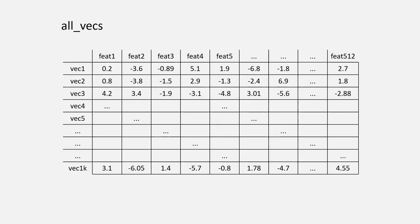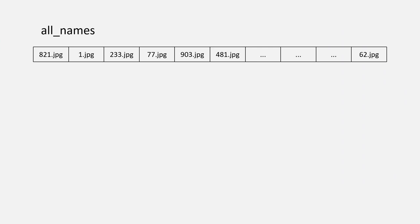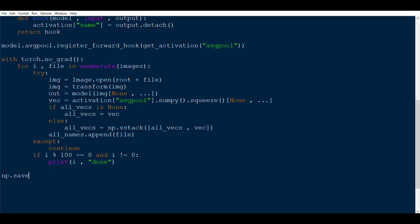In the all_vecs matrix, the columns are feature 1 through feature 512 (since the avgpool layer has 512 features), and there are 1000 rows — one vector per image — giving a matrix of size 1000×512. The all_names variable stores every filename. Finally, save these with np.save('all_vecs.npy', all_vecs) and np.save('all_names.npy', all_names).